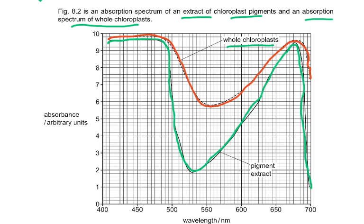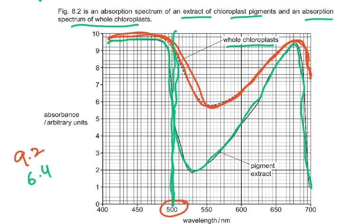Absorption is higher for the whole chloroplast throughout — it never dips below the pigment extract. For comparative data: at 500 nm, the whole chloroplast reads 9.2 AU and the extracted pigments read 6.4 AU. The explanation is that pigments are arranged on thylakoid membranes for better absorption in the intact chloroplast, and because the thylakoid membranes are stacked. Chloroplasts also contain more pigments; during extraction, not all pigments are recovered.